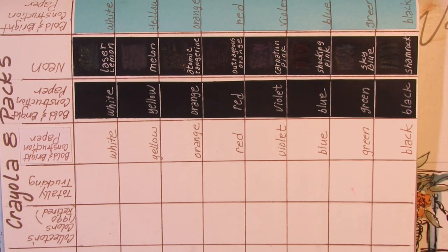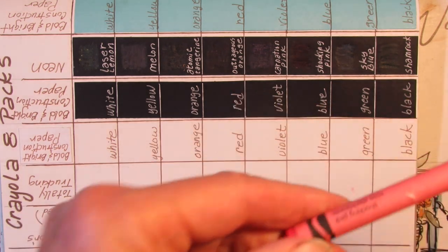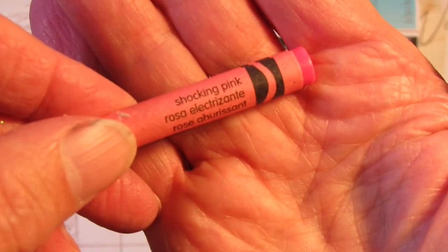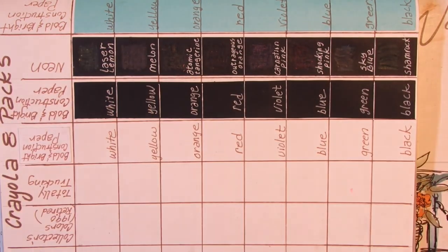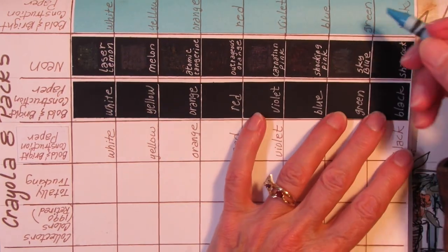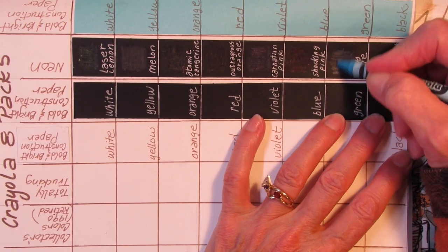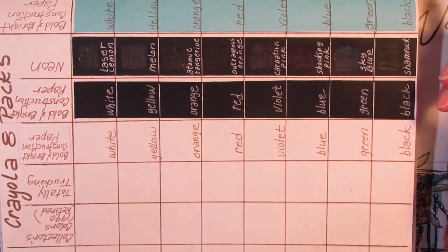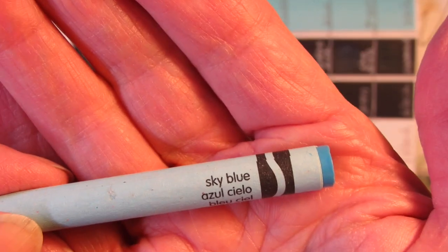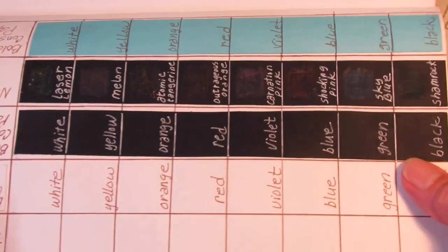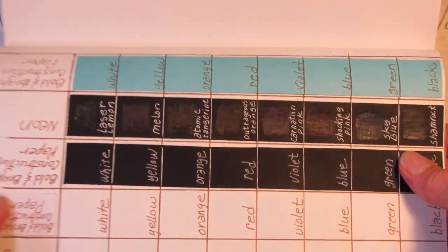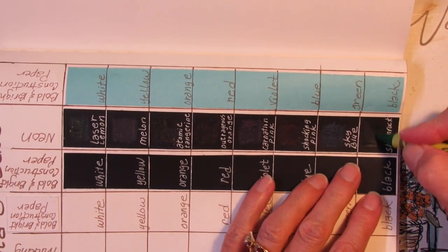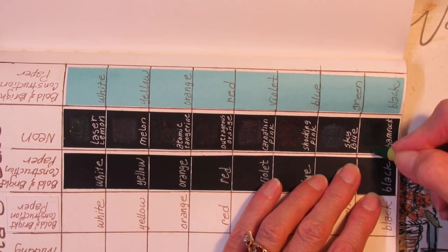Shocking Pink. Nothing there. Sky Blue. Sky Blue shows up very, very faintly there. You can see the waxy sheen, but there's not a lot of color. And this last one is Shamrock.